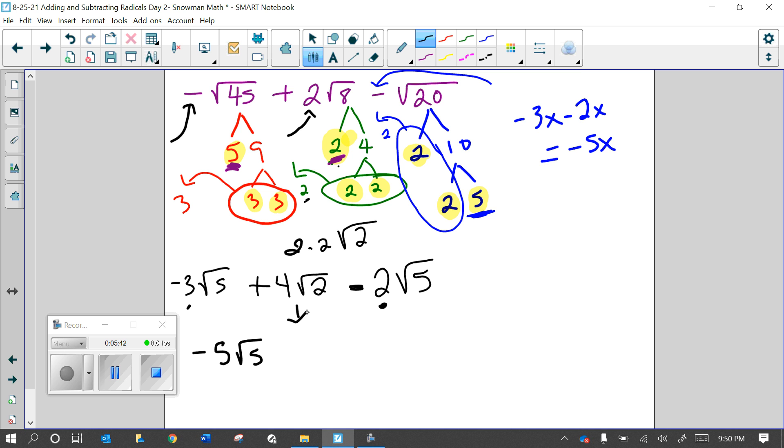Then you just bring down this plus 4 square root 2. And you're done. Now, if you were to get this answer, let's say you were to get 4 square root 2 minus 5 square root 5. That is the same thing. It's just in a different order. The exact same thing. So this is okay, too.